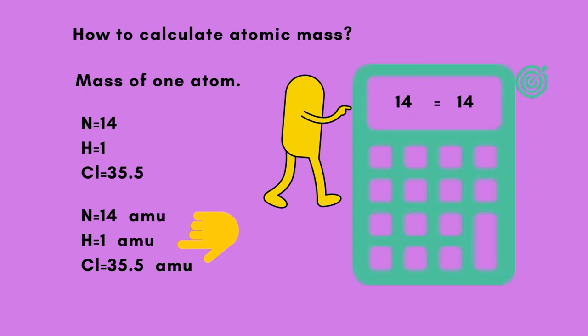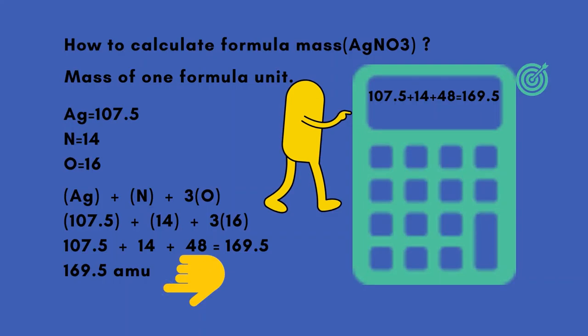How to calculate formula mass of AgNO3? Mass of one formula unit. Ag equals 107.5, N equals 14, O equals 16.